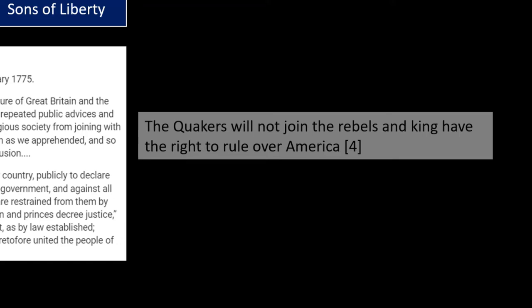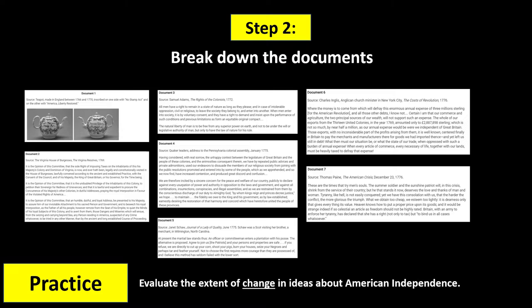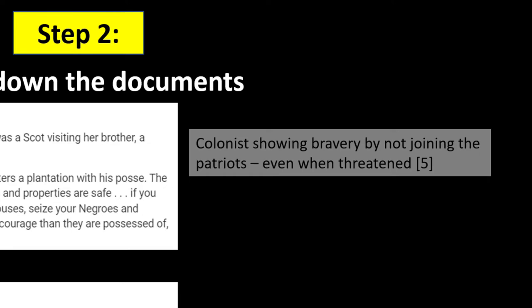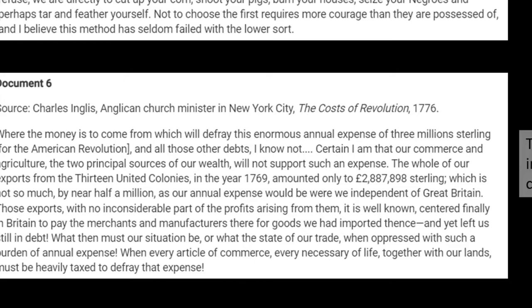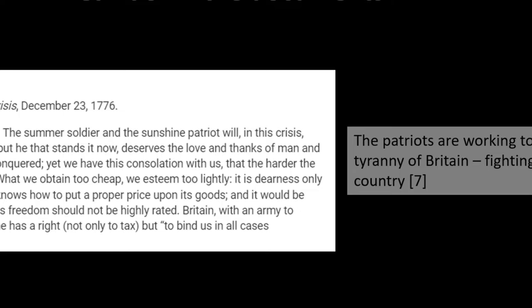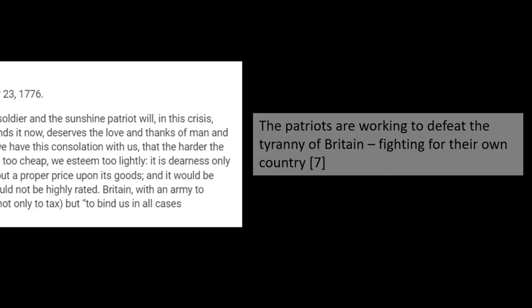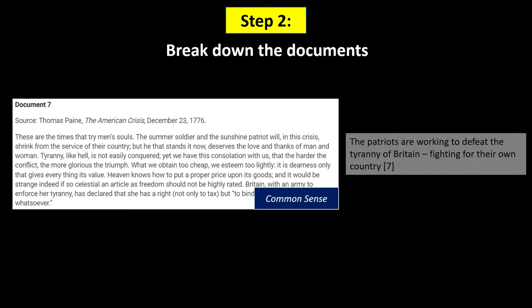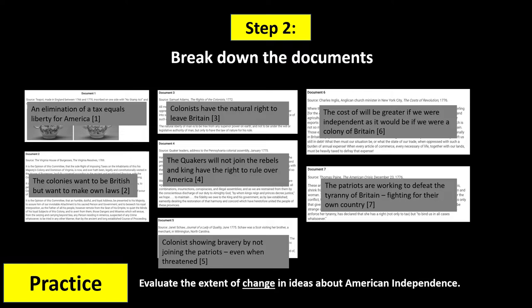These sentences are important because we'll use them to categorize the documents later. In Document 5, colonists show bravery by not joining the patriots, even when threatened. In Document 6, the cost of being independent would be greater than being a colony of Britain. Finally, in Document 7, Thomas Paine discusses how the patriots are working to defeat the tyranny of Britain, fighting for their country. Since Thomas Paine is the author, I'm going to use Common Sense as the historical situation or point of view of this document. Now that we've broken down the documents, we're ready for the next step.